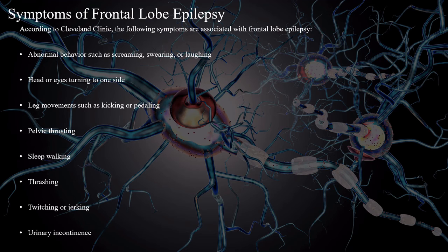According to Cleveland Clinic, the following symptoms are associated with frontal lobe epilepsy: abnormal behavior such as screaming, swearing, or laughing; head or eyes turning to one side; leg movements such as kicking or pedaling; pelvic thrusting; sleepwalking; thrashing; twitching or jerking; and urinary incontinence.